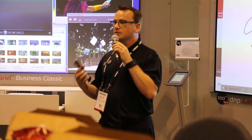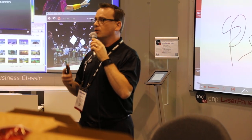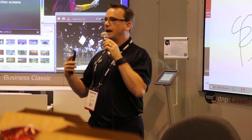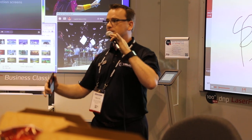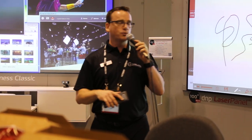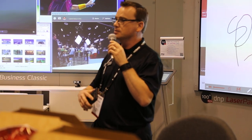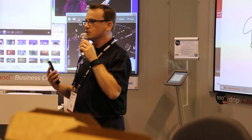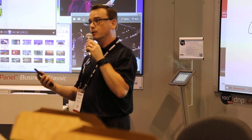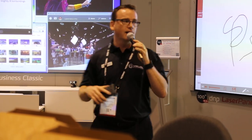LCDs are fantastic at transmitting most of the light the engine creates to the image on the screen, but they are the worst at blocking the black. The three-chip DLP is the opposite — incredible black levels but one of the least efficient in terms of light output. So there's a balancing act between engines and styles, and you have to weigh that against the ambient level in the room.